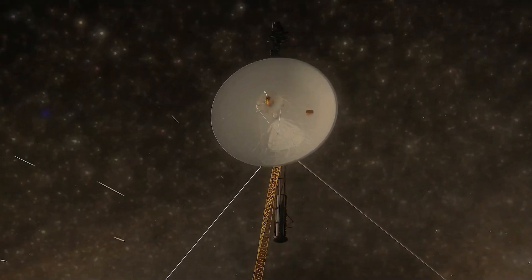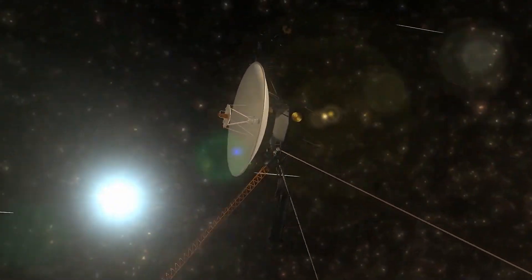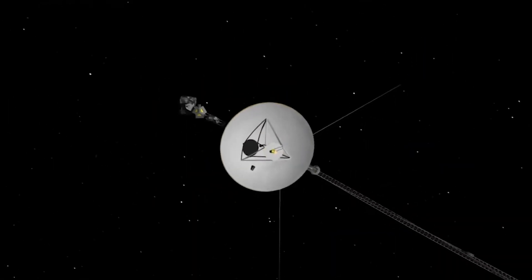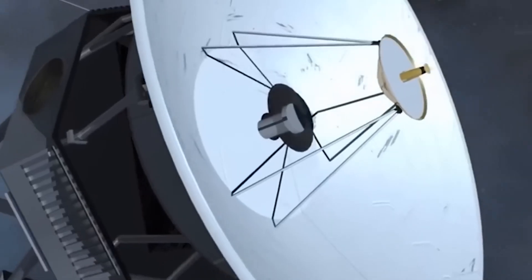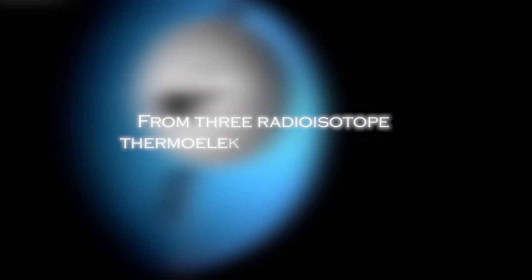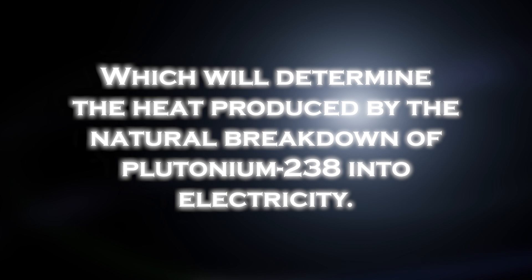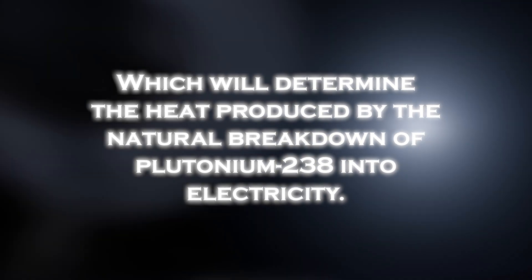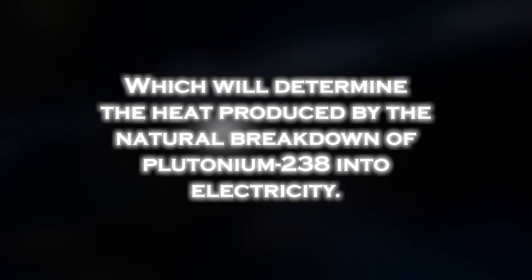However, this milestone was not easy to achieve. As the probe moved farther away from the sun, the amount of sunlight available to power instruments and systems significantly decreased. The spacecraft's power is generated primarily from three radioisotope thermoelectric generators, which convert the heat produced by the natural breakdown of plutonium-238 into electricity.